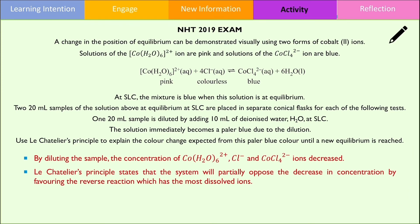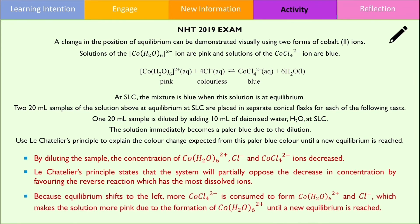Because equilibrium shifts to the left, the concentration of the cobalt chloride ion decreases while the concentration of chloride and the cobalt water complex slightly increases, making the sample slightly more pink or paler blue until the system reaches equilibrium. Although the reverse reaction is favoured, concentration of the chloride and cobalt water complex is still lower compared to the original concentrations prior to dilution.